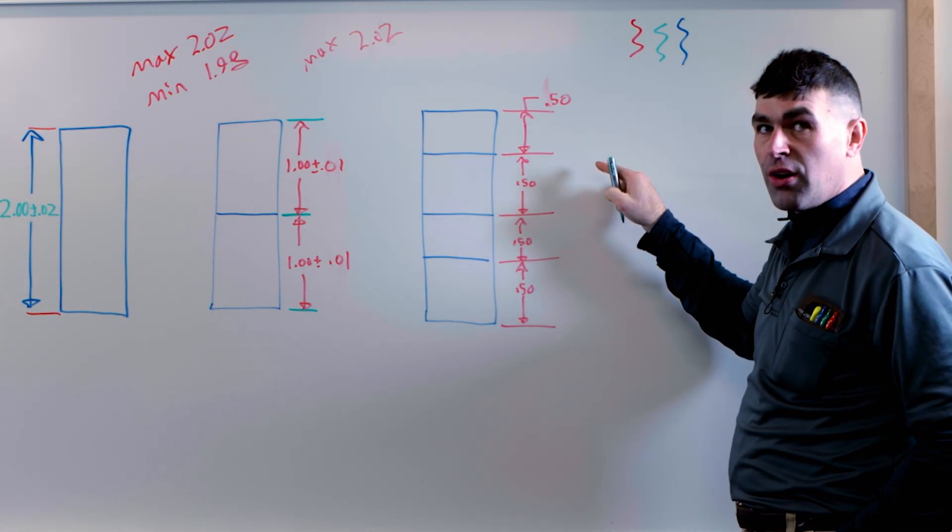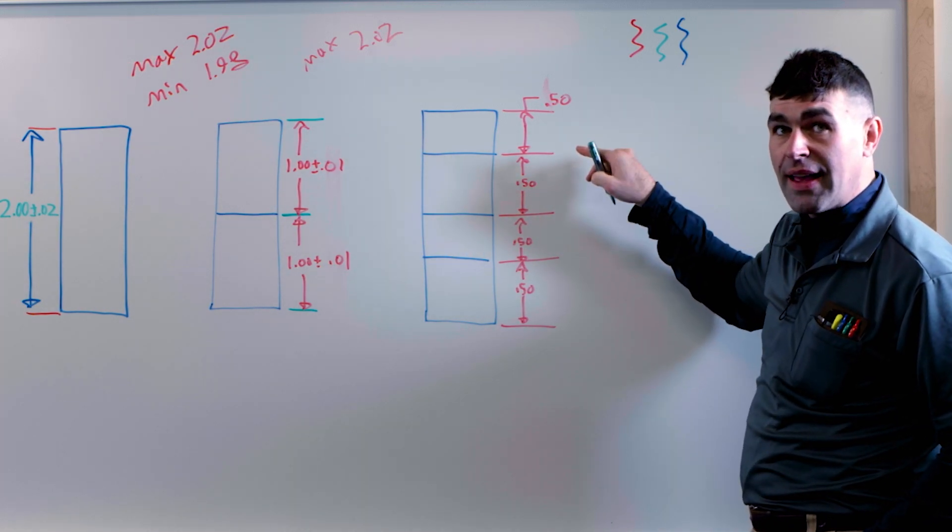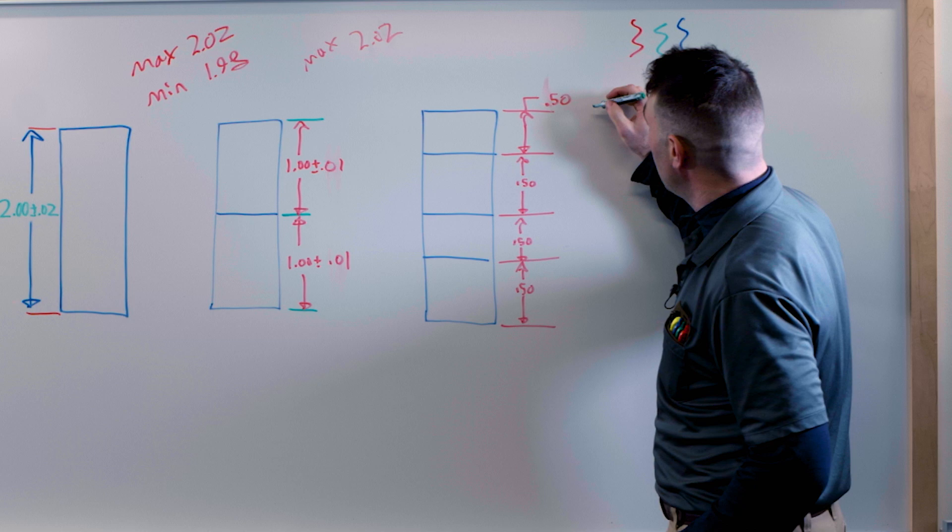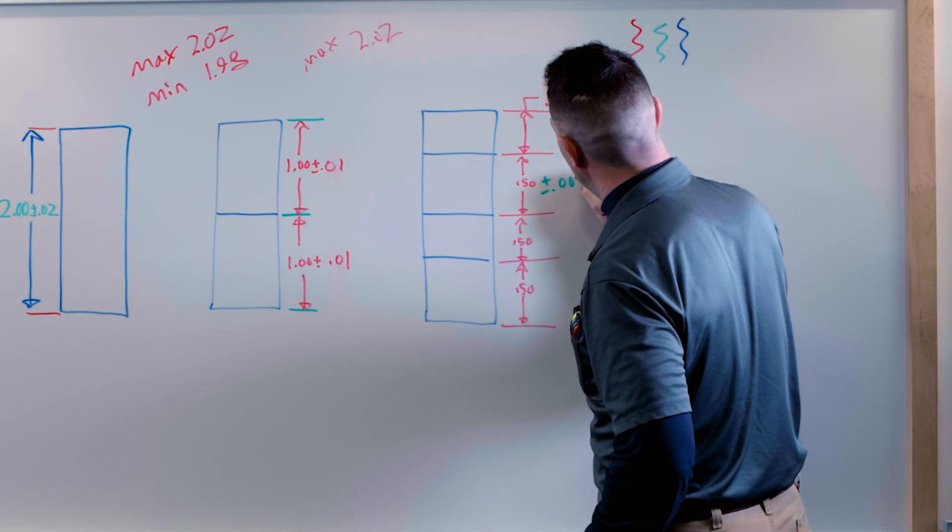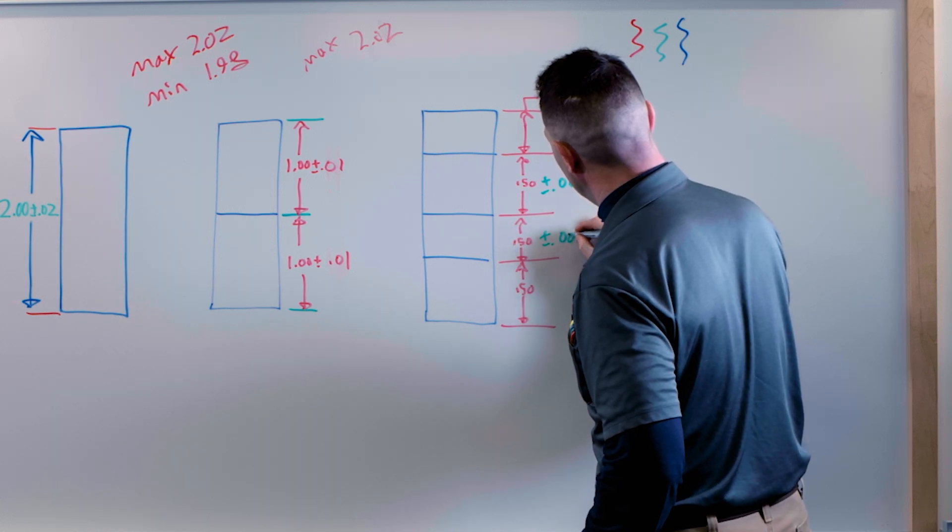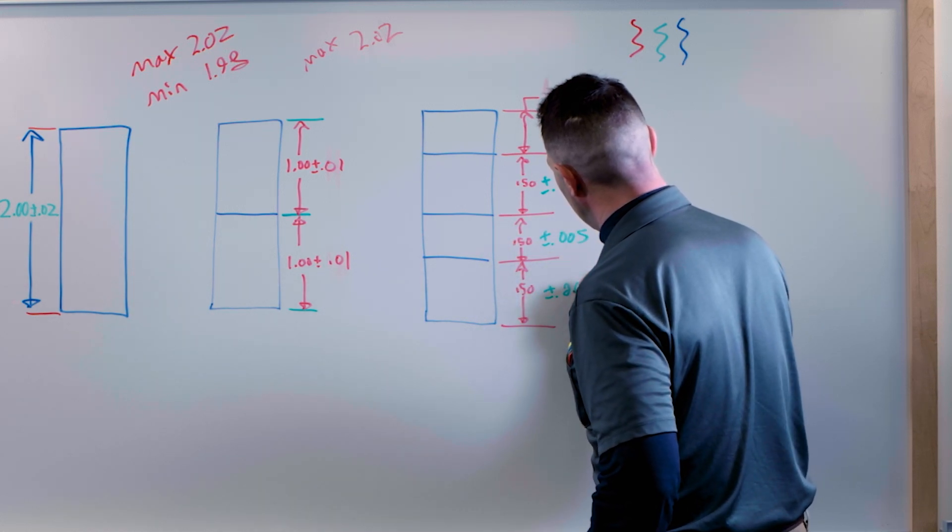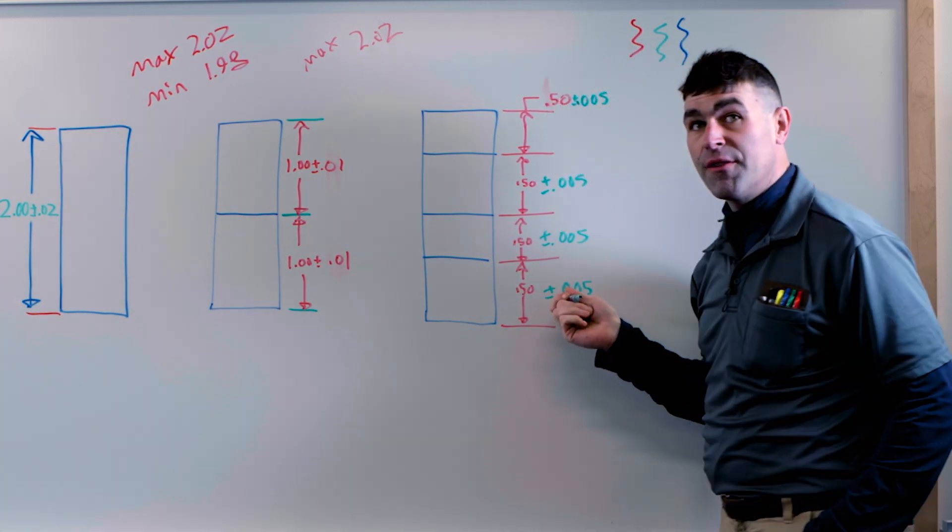So to get a total, we want 20 thousandths over two inches. We're going to do five, five, five, five, and five.